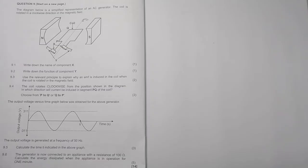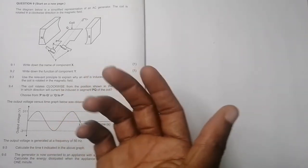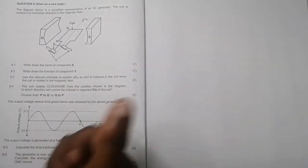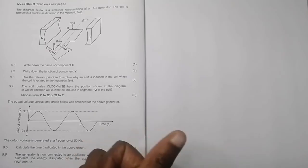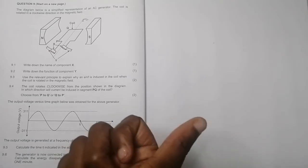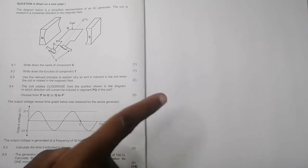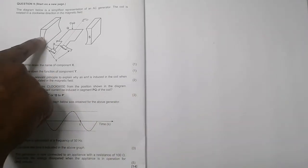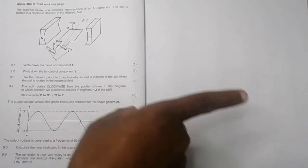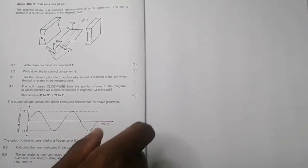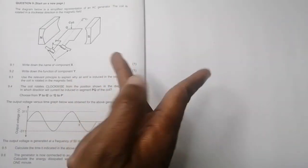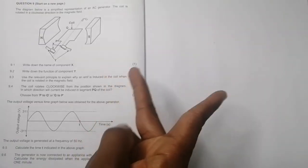Remember this is an AC generator which means remember for a generator we use the right hand. So meaning that now remember we said our thumb shows us the direction of rotation, our first finger shows us the direction of the field, and you can see there's our north and south so it means the field direction is in that direction, and we said that the middle finger, the second finger, shows us the direction of the current.